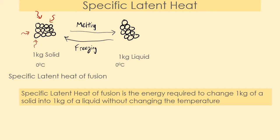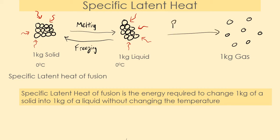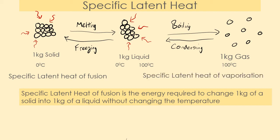So let's imagine we have a liquid and we continue to heat it, raising the temperature up to 100 degrees — the boiling point. We will then turn it into a gas. We have one kilogram of a gas, so this process is boiling or evaporation. Going back the other way is condensing. We're focusing on water here as an example — the boiling point of water is 100 degrees. As we change the liquid into a gas by boiling it, we take the temperature and we get a gas at 100 degrees as well. That is the specific latent heat of vaporization.